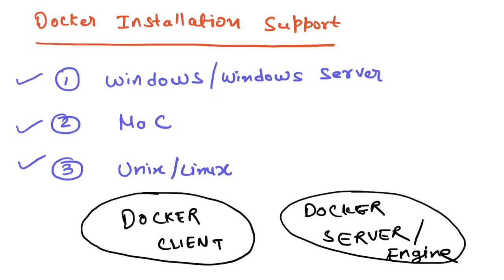The Docker Client gives you a CLI — a command line interface — where you can run Docker commands. Those commands internally communicate with the Docker Server. So the client is basically a gateway to your Docker Server or Docker Engine, and all the actions happen in the background on the server.